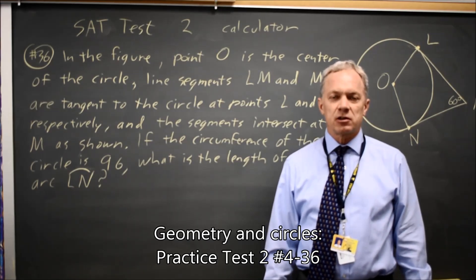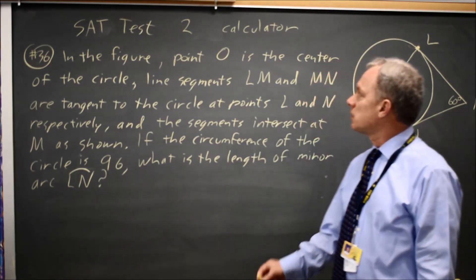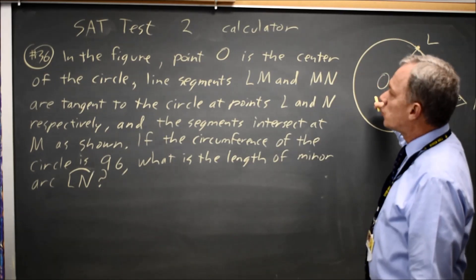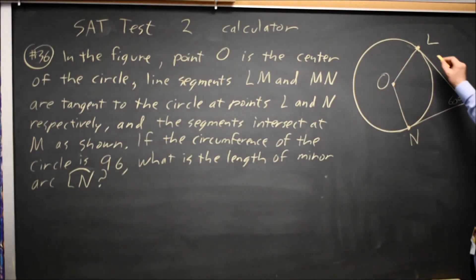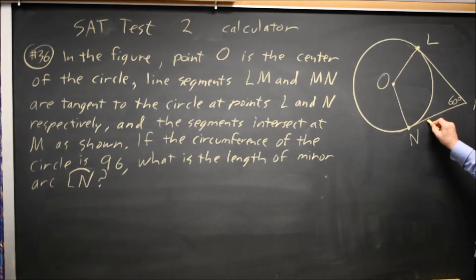This is SAT test 2, calculator question number 36, dealing with a point O in the center of a circle, two line segments that are tangent to the circle, LM and LN.